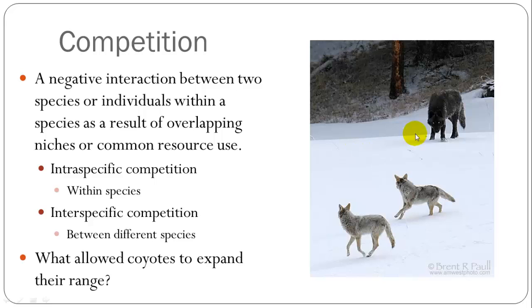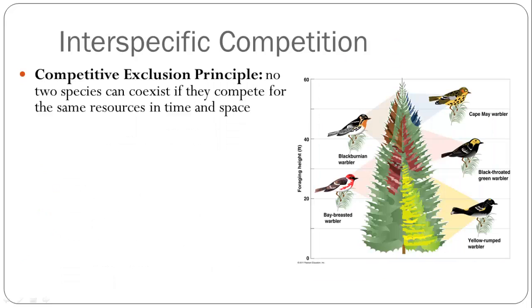The removal of wolves from eastern and western North America removed that competition, which had been keeping coyotes in check. Once that competition was removed, coyotes were allowed to expand — that was at least one factor allowing them to expand into the native wolf range. One of the ways species avoid competing is to use resources differently. According to the competitive exclusion principle, no two species can have the same resource use at the same time and place.